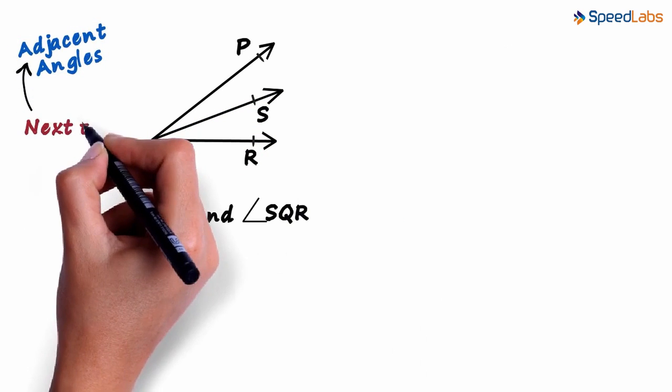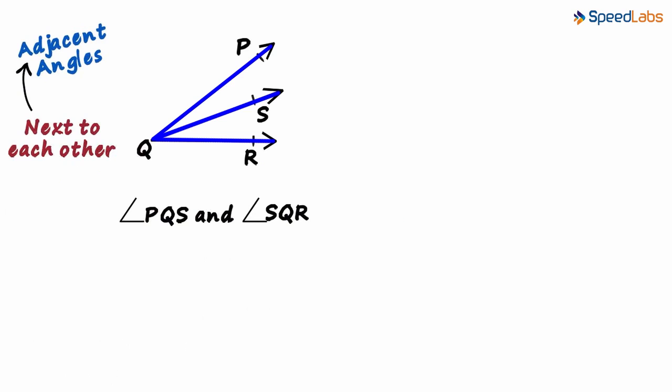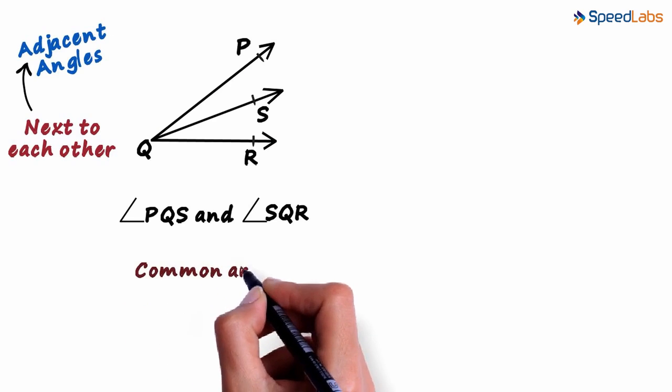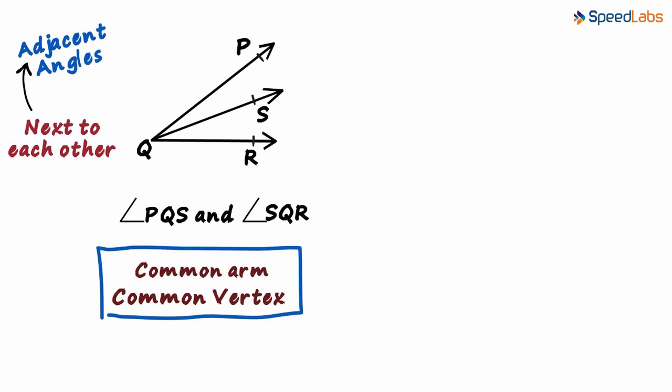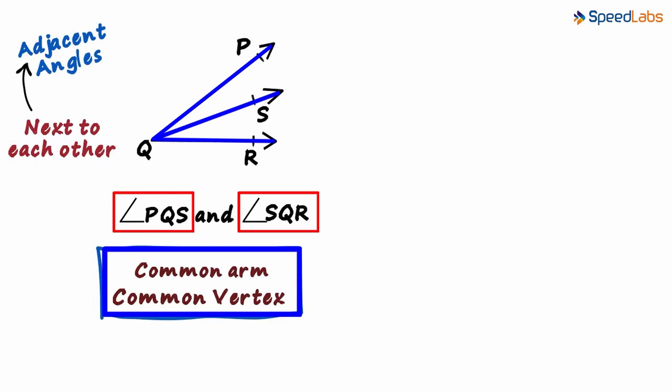Adjacent simply means next to each other. Since these two angles are right next to each other, they are considered adjacent angles. Also, adjacent angles have one common arm and a common vertex. In this example, ray QS is the common arm to both angles and point Q is the common vertex. For two angles to be adjacent, both these conditions have to be satisfied.